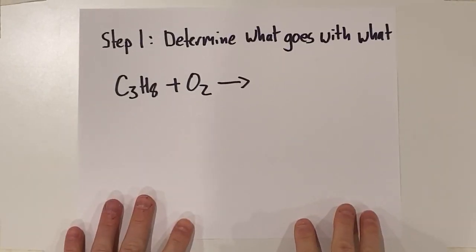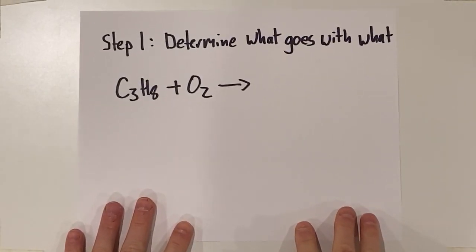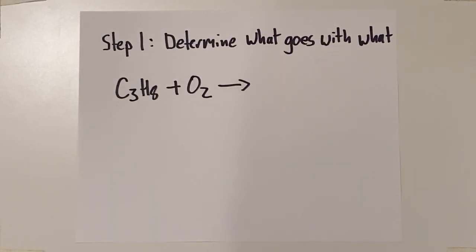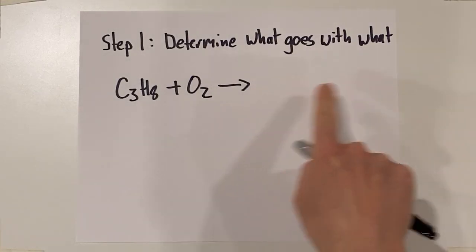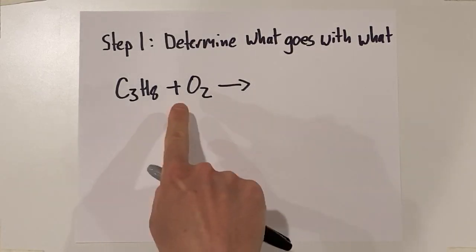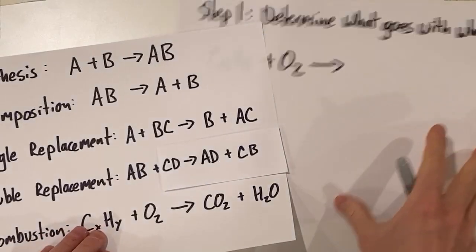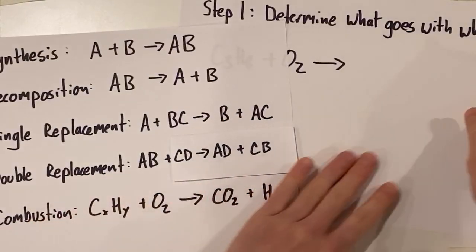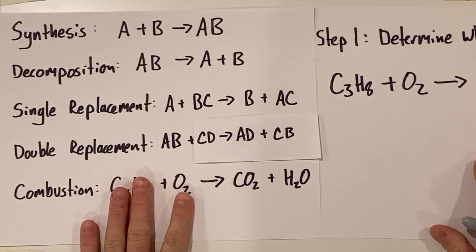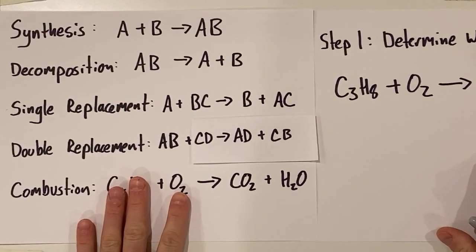So, let's get right to it. Our first example is C3H8 plus O2. In step one, of course, is determine what goes with what. We want to figure out the arrangements of the atoms with each other on the product side. Like before, we're going to do that using a table of different reaction types.